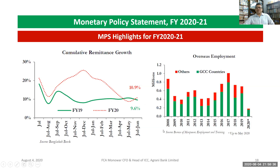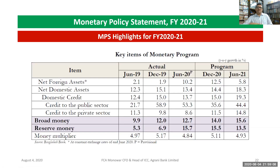Key items of the monetary program: Net foreign assets — June 2020 actual 10.2%, December 2020 program 12.5%, June 2021 projected 5.8%. Net domestic assets — June 2020 actual 13.4%, December 2020 program 14.4%, June 2021 projected 18.3%. Domestic credit — June 2020 actual 13.7%, December 2020 program 15.7%, June 2021 projected 19.3%. Credit to the public sector — June 2020 actual 53.3%.